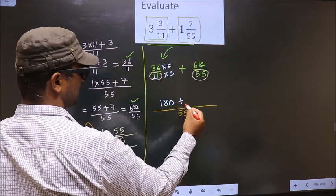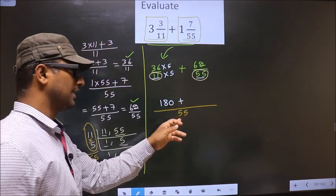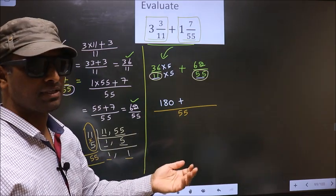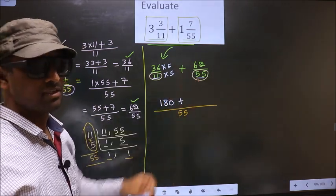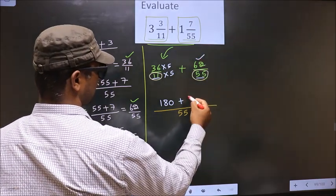Plus symbol as it is. Now, here we have 55, here also 55. Both numbers are the same, so we don't need to multiply any number to this one. So, you should write the numerator as it is, that is 62.